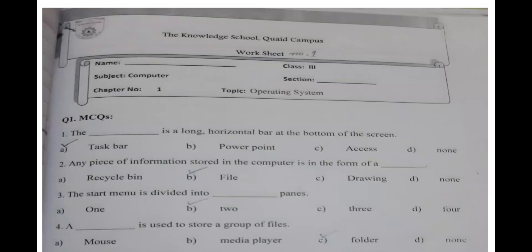Number two: any piece of information stored in the computer is in the form of data. Let's say you have any information, for example you have MS Paint or MS Word, and you want to save your own file or folder.